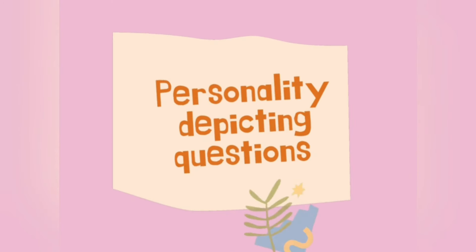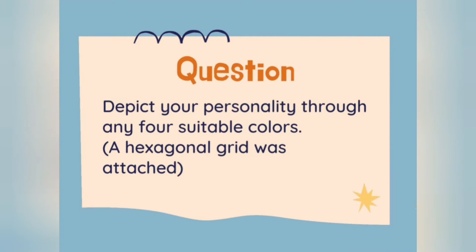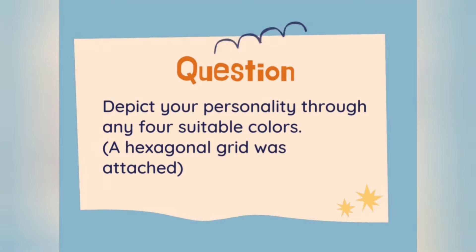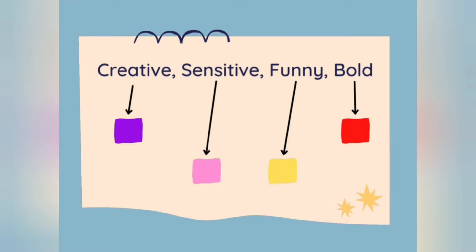The next kind of question is personality-depicting questions. Most students face problems attempting such questions. Here we have a question to depict your personality through colors, and a hexagonal grid is attached. To attempt such questions, first think of four personalities of yours — for example, a student who is creative, sensitive, funny, and bold. Then use your color psychological skills and fill your grids with those colors.